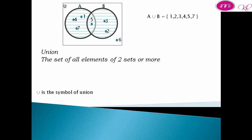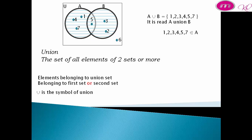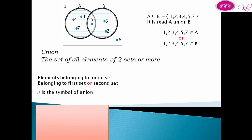This is the symbol of union. A union B equals {1, 2, 3, 4, 5, 7}. Elements belonging to the union set belong to the first set or the second set — that is, 1, 2, 3, 4, 5, 7 each belong to A or to B.